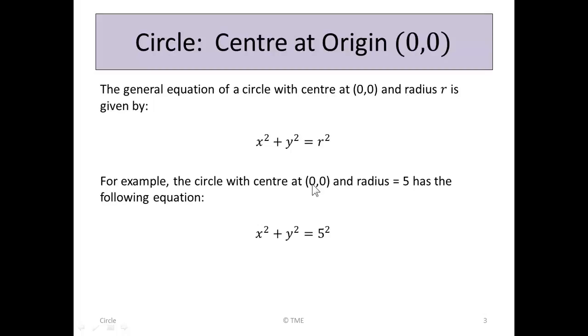For example, the circle with centre at (0,0) and the specific radius equal to 5 has the following equation: x squared plus y squared, and for r which is a value of 5, we put in 5 squared. So x squared plus y squared equals 5 squared is the only circle with centre at the origin and a radius of 5.